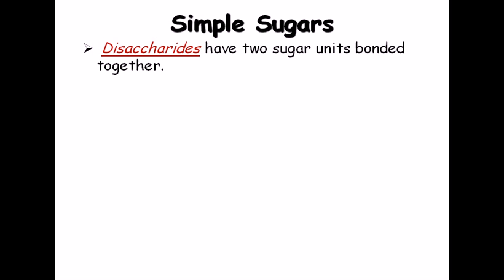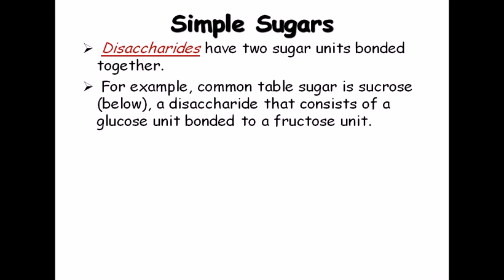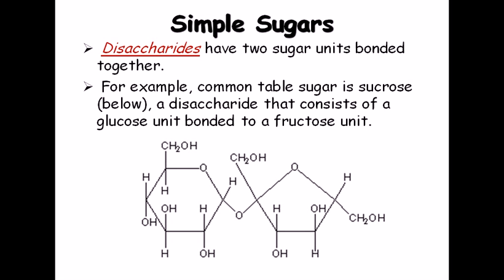Disaccharides are also part of the simple sugars and are made up of two monosaccharide sugar units. Common table sugar is sucrose, which is renowned for its typical sweetness. It is a disaccharide that consists of a glucose unit bonded to a fructose unit. The linkage between them is called the glycosidic linkage or glycosidic bond, which is created due to the removal of water.